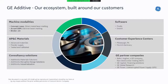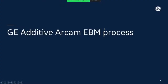Before we dig into the technology, I'd like to briefly introduce GE Additive. GE Additive is what we call an ecosystem of additive manufacturing, with products ranging across the entire additive manufacturing value chain. It is unique in offering both laser-based powder bed and EBM-based powder bed additive manufacturing, as well as binder jet additive manufacturing, plus powder, consultancy services, and software to support the additive ecosystem.